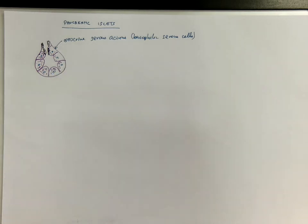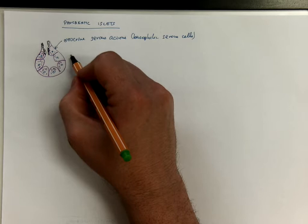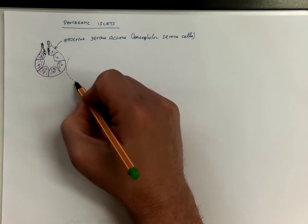In contrast to these you can find the endocrine islets of various size.